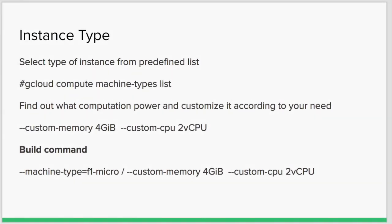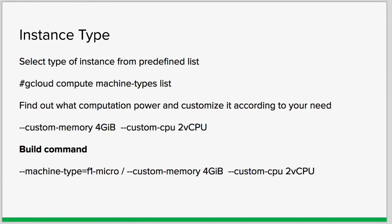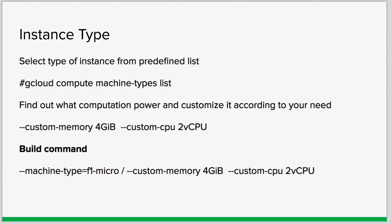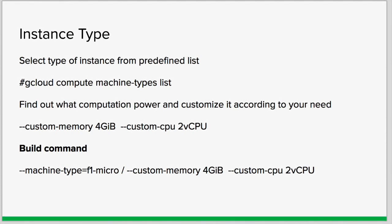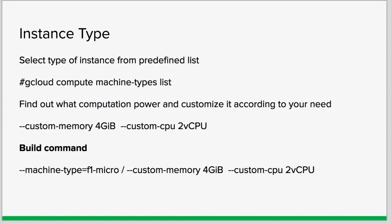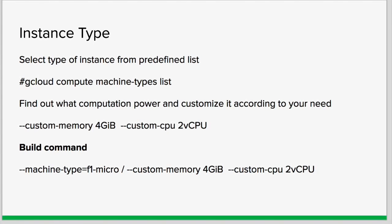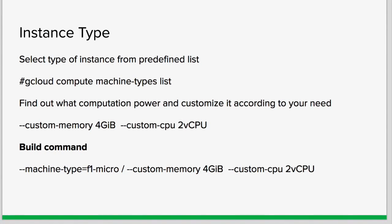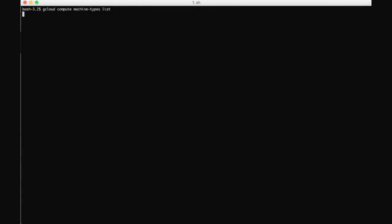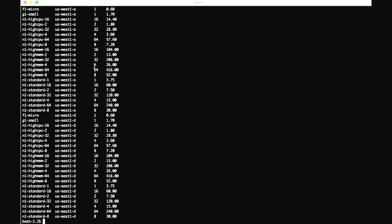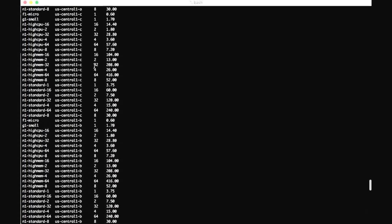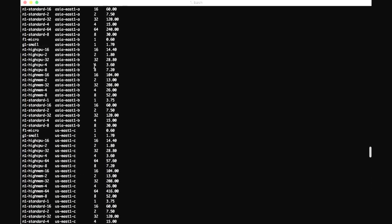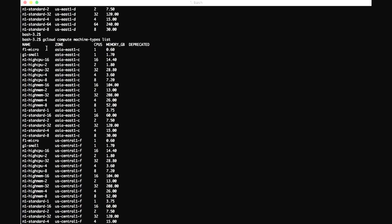The next step is to identify the instance type. Using the gcloud compute machine-types list command we can identify how many types of instances are available — it will tell you how many vCPUs they have and the RAM size. There are two options: you can choose from predefined instance types, or you can customize your instance according to your need. This command gives a list organized by zone, memory size, and number of CPUs.